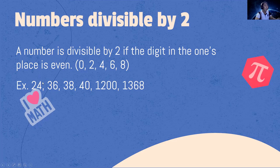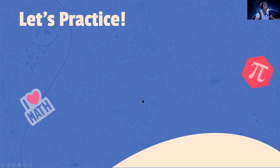24 ends with 4, which is an even number. 36 ends with 6, an even number. 38 ends with 8, an even number. 40 ends with 0, an even number. 1,200 ends with 0, an even number. 1,368 ends with 8, an even number. Therefore, all of these numbers are divisible by 2.